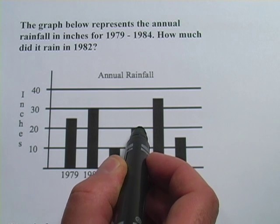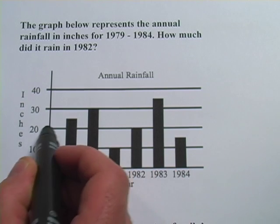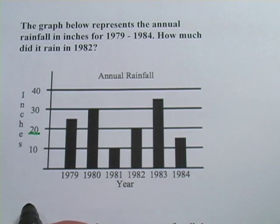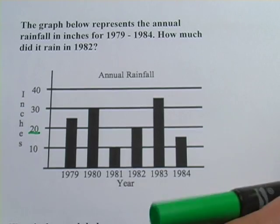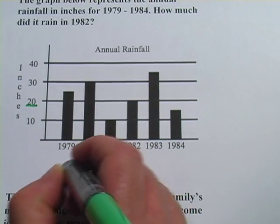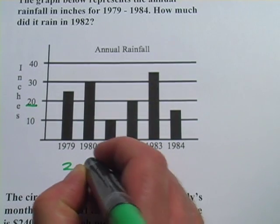How high does it go up? It looks like this one touches the line that's at 20. So I would say in 1982 it rained 20 inches.